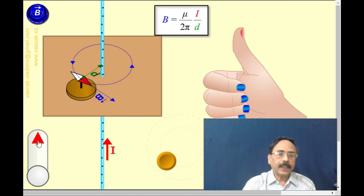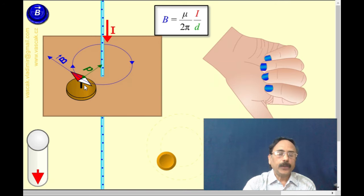Now if I change the direction of the current, you would observe that the magnetic needle is deflected and the direction of the magnetic field is also reversed.